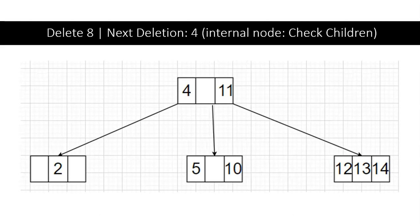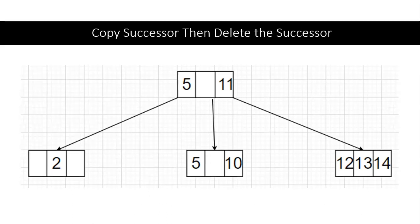Now we're going to be deleting 4. It is an internal node and it has a child with two keys inside of it. We copy 5, which is the successor, and then delete the successor afterwards.